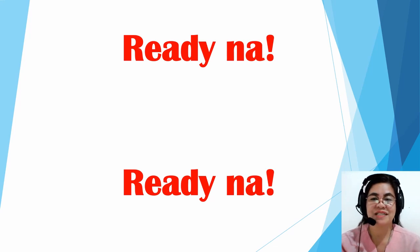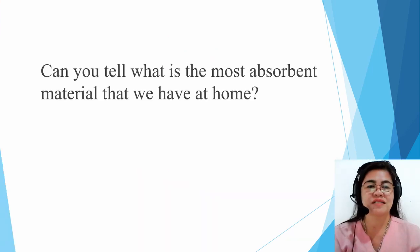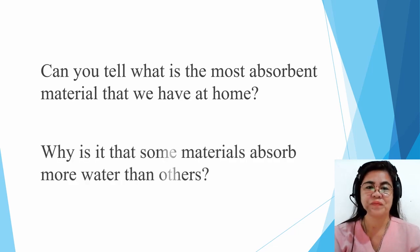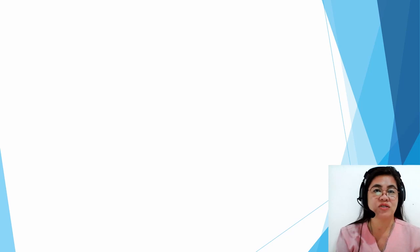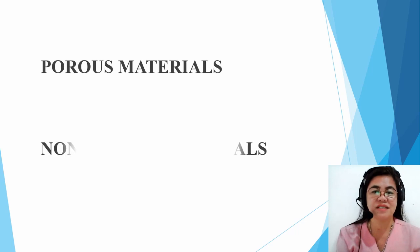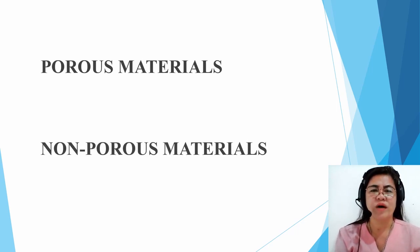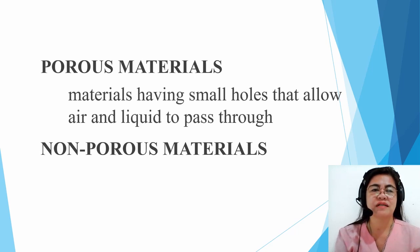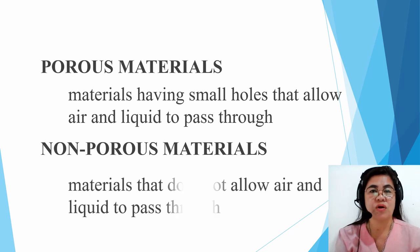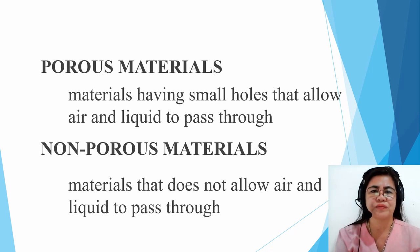Let us review. Can you tell what is the most absorbent material that we have at home? Yes, it is cotton. Why is it that some materials absorb more water than others? Can you recall the two classifications of materials? We have porous materials and non-porous materials. Porous materials are those having small holes that allow air and liquid to pass through, while non-porous materials do not allow air and liquid to pass through.